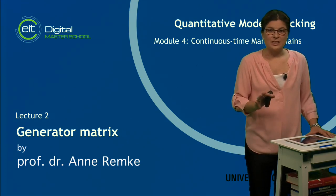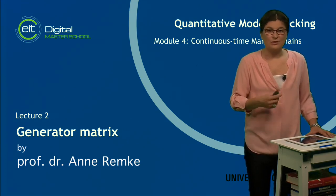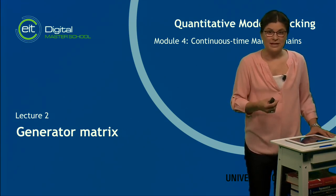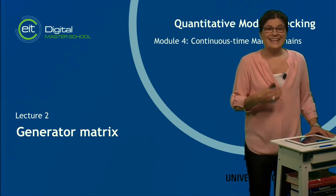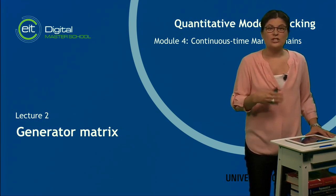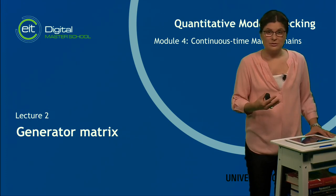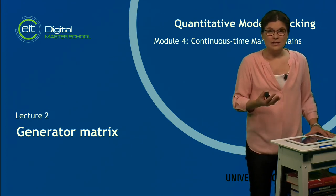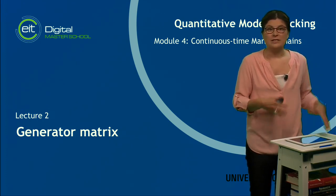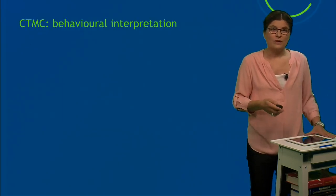In the previous lecture, you've seen how to use the rate matrix to specify the transition behavior of a CTMC. This lecture will introduce the so-called generator matrix, which we need just for convenience. It makes things easier to compute.